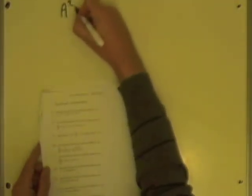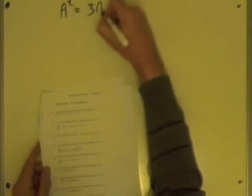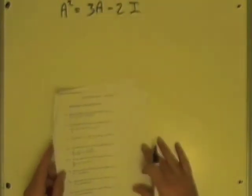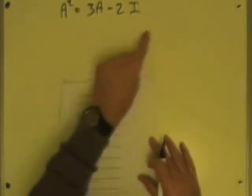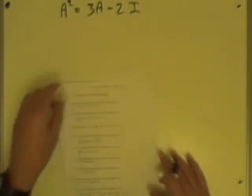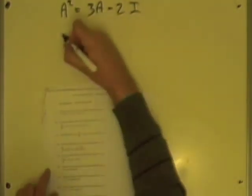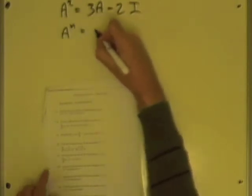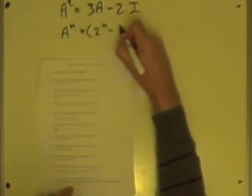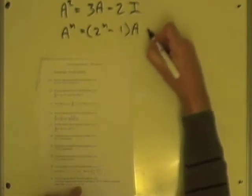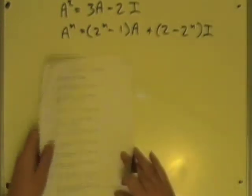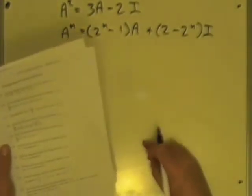Given a non-singular square matrix — meaning it has an inverse — here is a description of the matrix: A squared equals 3A minus 2I. Since it is non-singular, this can be rearranged so that A times something equals I, that something being its inverse. The claim is that A to the n equals 2 to the n minus 1 times A, plus 2 minus 2 to the n times I, where I is the equivalent identity matrix.